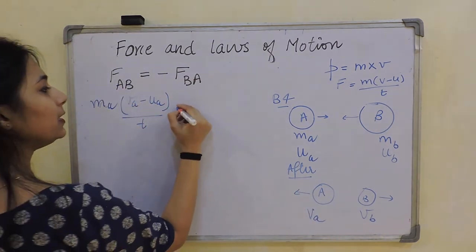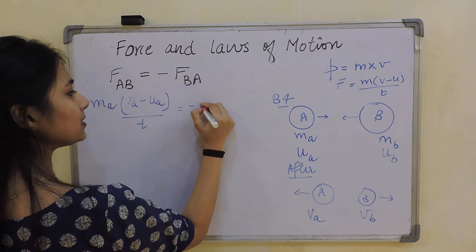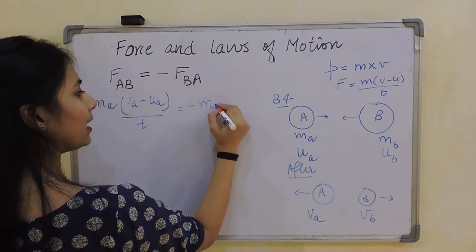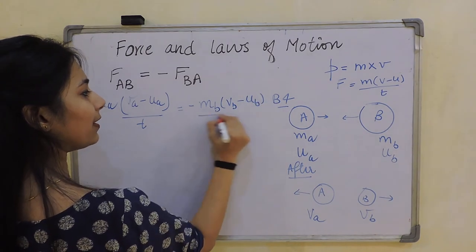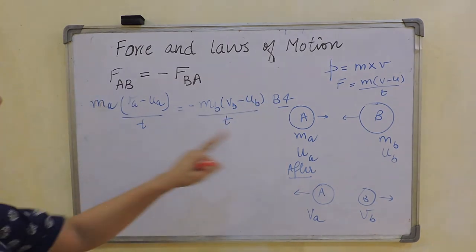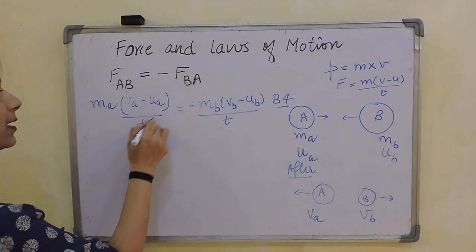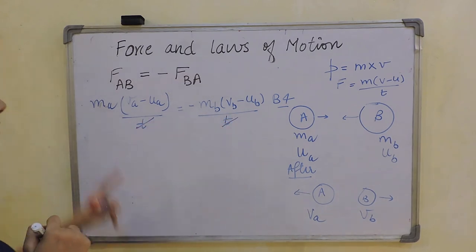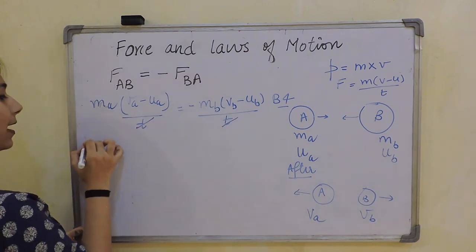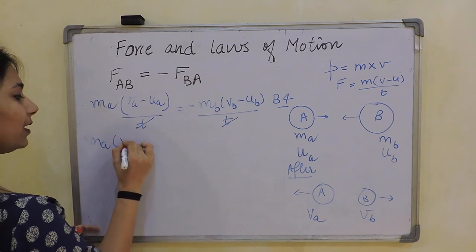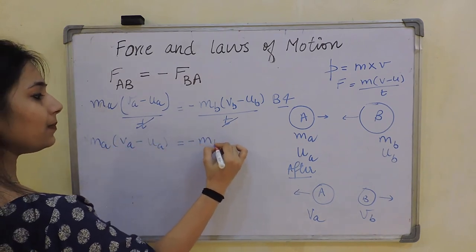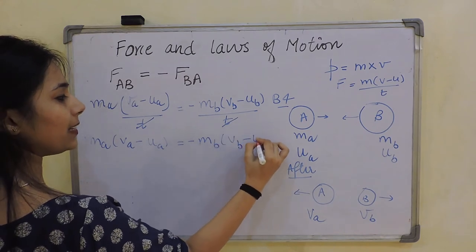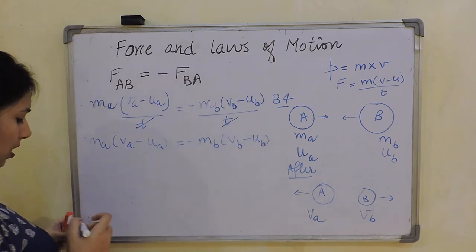Similarly for the other one, I'll have minus force applied by B is m_b(v_b - u_b) divided by t. Now since the time taken is the same, I can cancel these two out. What I'll get next is mₐ(vₐ - uₐ) equals minus m_b(v_b - u_b).